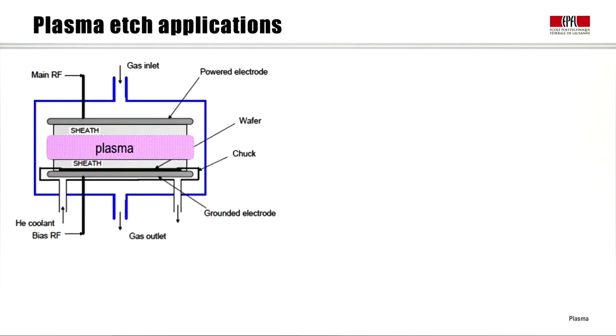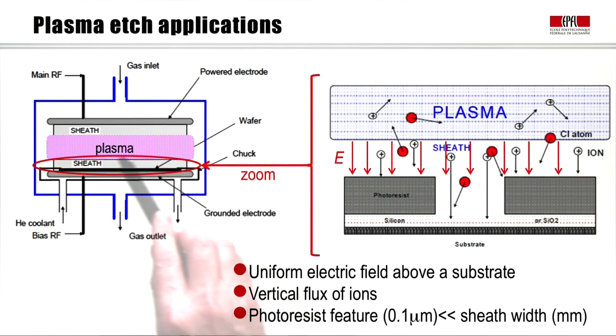Let's see how our understanding of the sheath properties can help explain the applications of plasma etching. This is a plasma etch reactor. The vacuum chamber is blue. There are two electrodes and a plasma forms between the electrodes. Therefore, there is a sheath in contact with each electrode. Let's look in more detail at the sheath region. We zoom in on this sheath and we see that we have a plasma in contact with a photoresist on a silicon substrate.